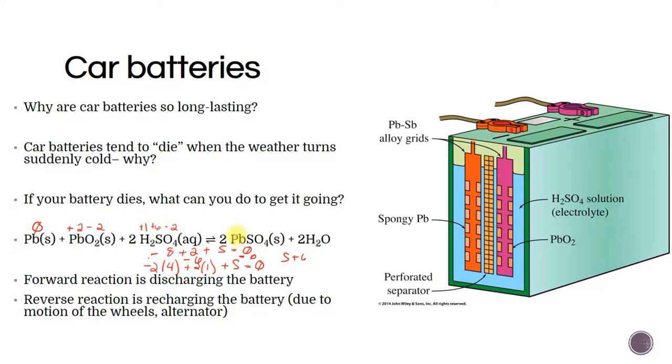So negative 8 plus 2 plus whatever sulfur is will equal the charge on the compound, which is zero. We have negative 6 plus sulfur equals zero, so that means sulfur is positive 6. The lead here has to be plus 2 because sulfate is minus 2, and the sulfur did not change oxidation state. Over here, we have our rules for hydrogen and oxygen.